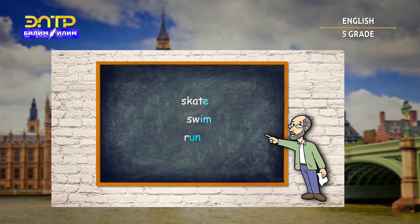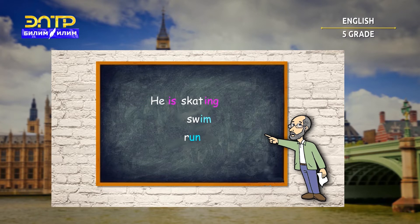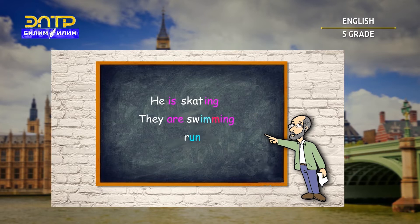There are three verbs written here. You have to make a sentence using these three verbs in the present continuous tense. We made the present continuous tense using the verb 'skate,' so we've got 'he is skating.' What about the second verb 'swim'? They are swimming. And the last verb — please make a sentence using 'run.' Yeah, we can write 'she is running.'